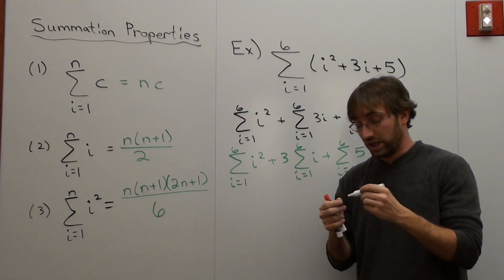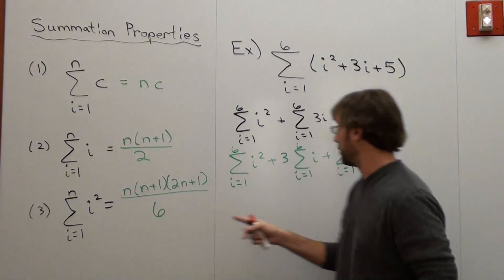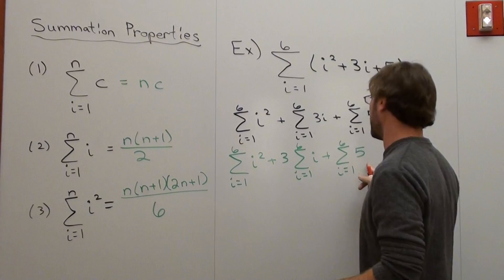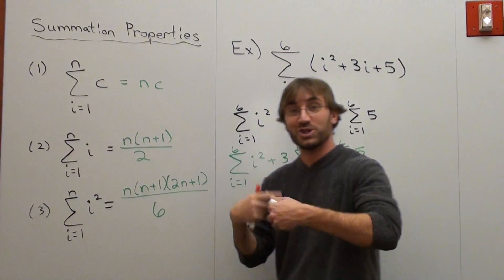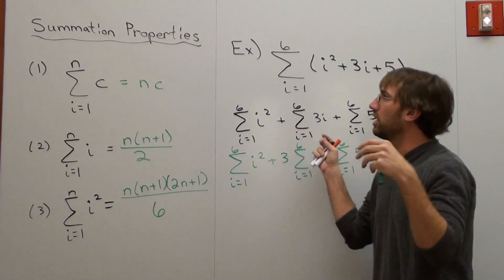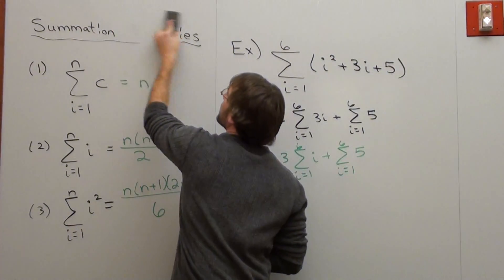So this is pretty cool. When you've got an i squared, you use this formula to figure it out. When you've got an i, you use this formula to figure it out. And when you've got a constant, you just use this one. So we're using all three at the same time. And we use the addition summation property to split it up. Actually, this should be called summation formulas.